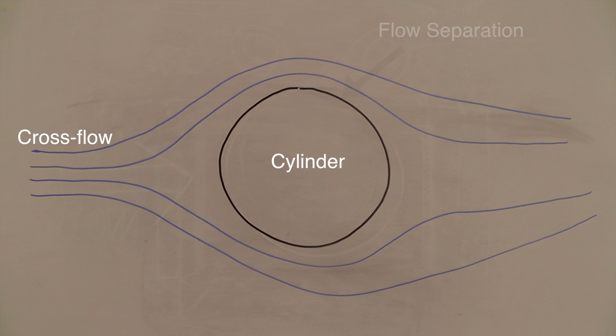To understand how a synthetic jet actuator reduces drag, first we must know how a fluid passes over an object. If we place a cylinder into a cross flow, we can represent the flow through the use of streamlines. We can also see points of separation where the main body of the fluid is no longer in contact with the cylinder.